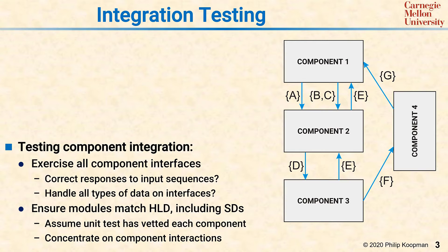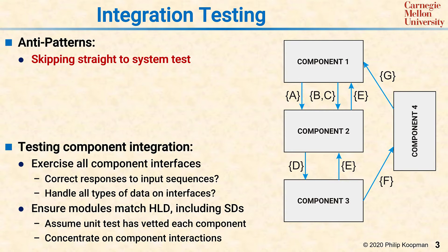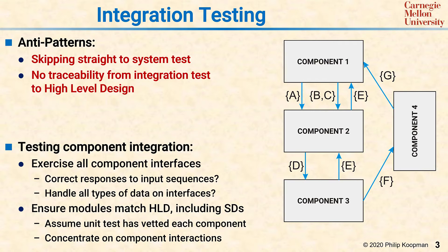The anti-patterns for integration testing include skipping straight to system tests. Once you're done with the unit test, you could just try and run the system, but you can easily miss subtle interaction problems that result in the system almost working, and you're not knowing that there's some sort of issue that the implementation does not match the intended high-level design, because things mostly work and you don't notice the difference.